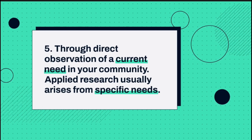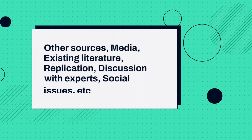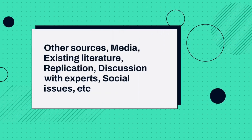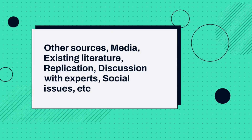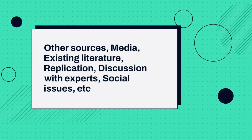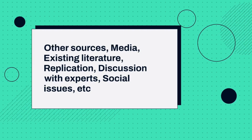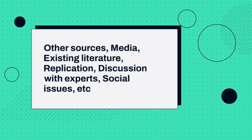Number five is through direct observation of a current need in your community — you see a problem and want to solve it, and you realize that reaching a solution requires doing research first. Other sources of research problems include media, existing literature, replication but not duplication, and discussions with experts. Remember, research isn't about hearsay; it must be anchored on data. Even when we use these sources, you must go to literature and anchor your problems on data.